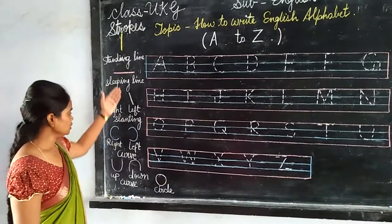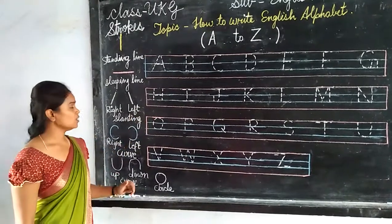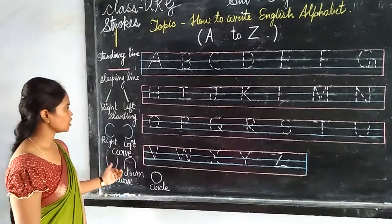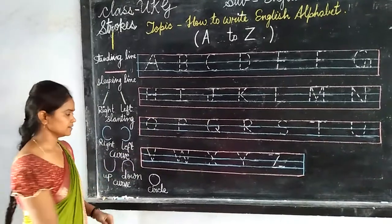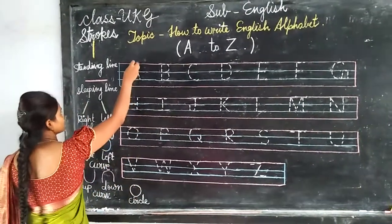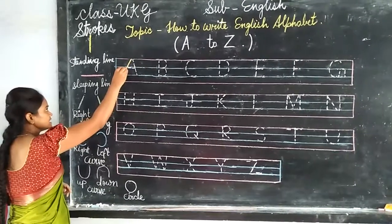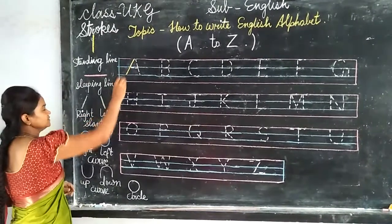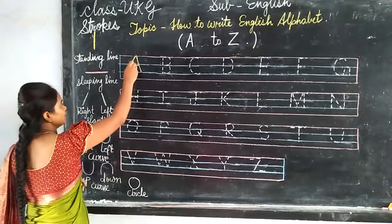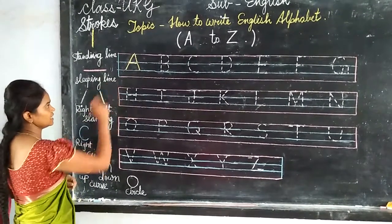We use strokes to write letters. Now we will learn how to use these strokes to make a letter. Right slanting line, left slanting line, and in the middle a slipping line. A.